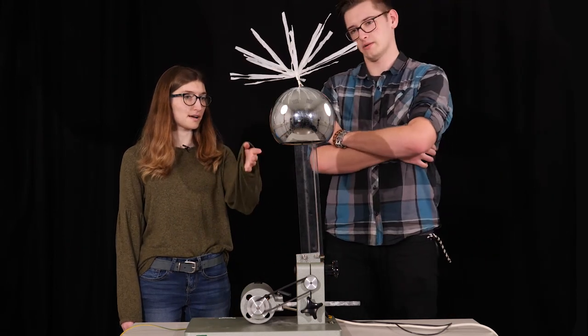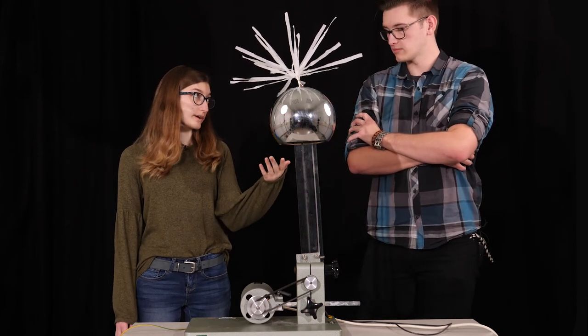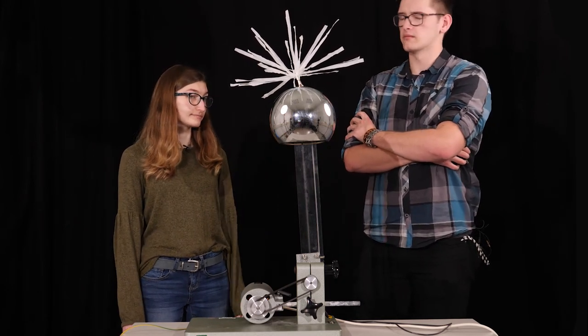You know, I think it's because all of the positive charge comes to the surface of the sphere, and then the paper umbrella also has a positive charge, so they repel. That makes sense.